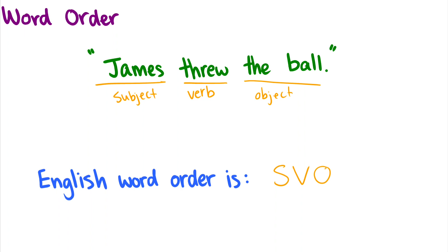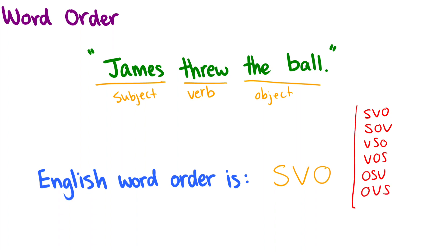You can imagine that with subject, verb, and object there are going to be six possible word orders in a language: SVO like English, SOV where the object comes before the verb, VSO, VOS, OSV, or OVS. So there are six different possible ways that subjects, verbs, and objects can be represented, and depending on your language you'll have a different arrangement.